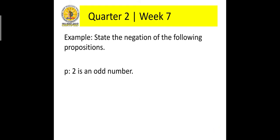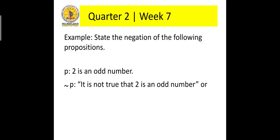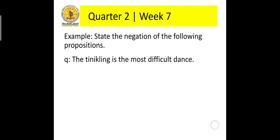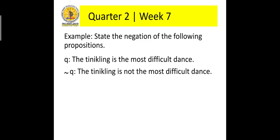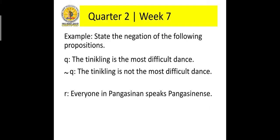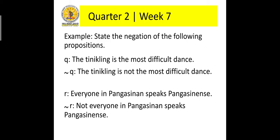Example: Let proposition P be '2 is an odd number.' The negation of the proposition is: 'It is not true that 2 is an odd number,' or equivalently, '2 is an even number.' Another example: 'The tinikling is the most difficult dance.' The negation is: 'The tinikling is not the most difficult dance.' Another example: 'Everyone in Pangasinan speaks Pangasinense.' The negation is: 'Not everyone in Pangasinan speaks Pangasinense.'